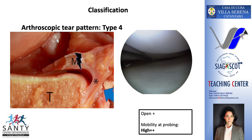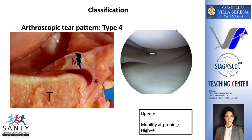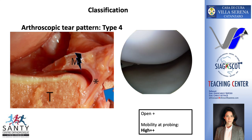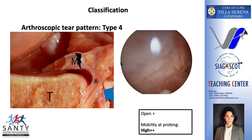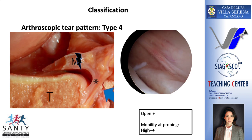Here is the type 4, which is the second most common type. It is also unstable when tested through the anterior portal. However, it is really hard to see the lesion from the anterior portal. When we push the scope deep into the notch, it's easy to find this open tear with meniscal tissue on both edges.